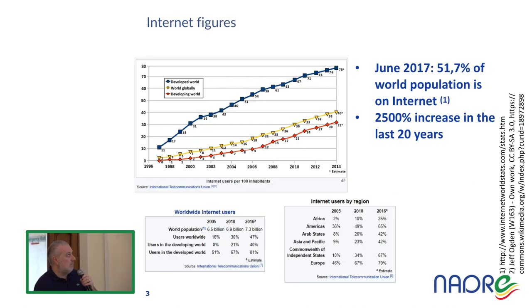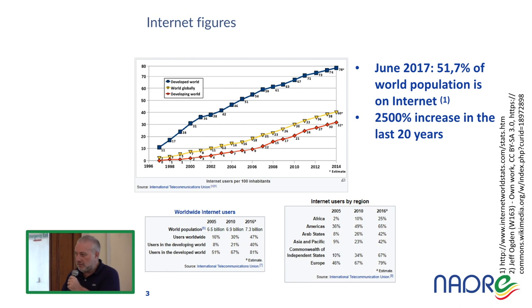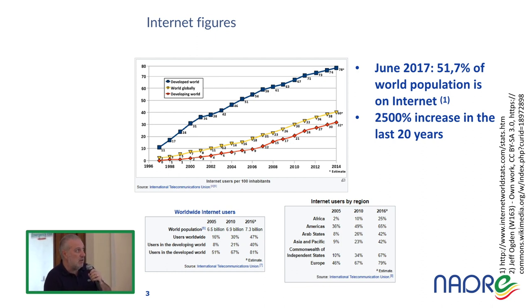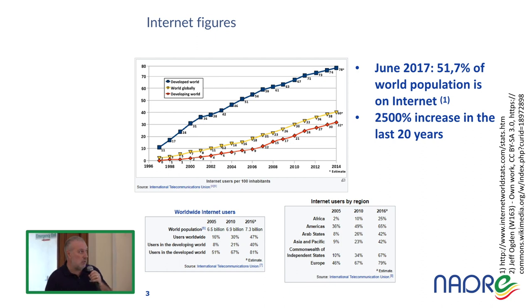Some figures. Almost one and a half years ago we crossed the 50% limit in people connected to the internet. So there are more people connected to the internet in the world than people who are not connected. Of course the number of people connected is very different country by country, region by region, but this is actually a very good index. The world population on the internet is more than half of the total population of the world — more than 3.5 billion people. This is a tremendous success — a 25 times increase in the last 20 years.